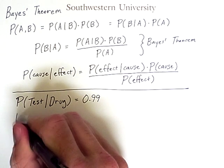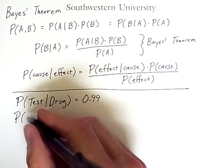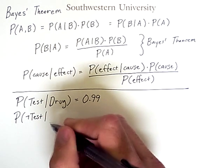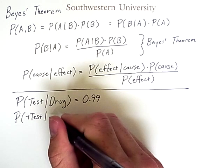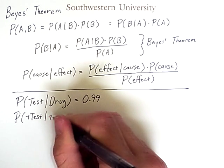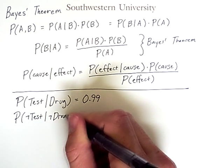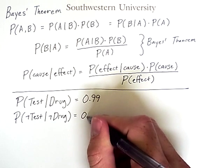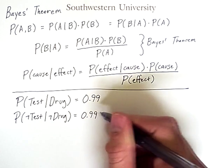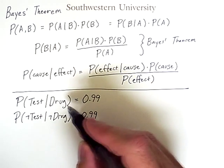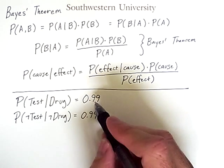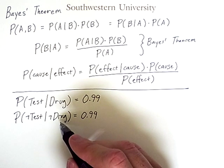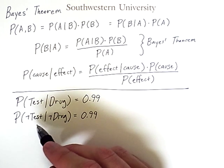Now let's also say that the test will fail—you'll get a negative result on the test if it is the case that you are not a drug user of that particular drug anyway—also 99% of the time. So if you are using that drug, this test will identify you almost all of the time. If you are not using that drug, this test will fail almost all of the time.